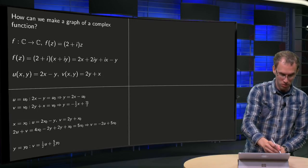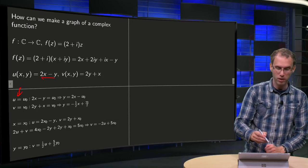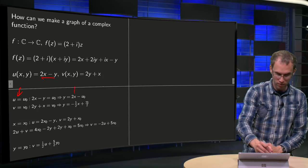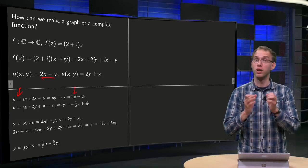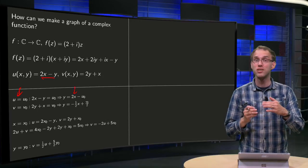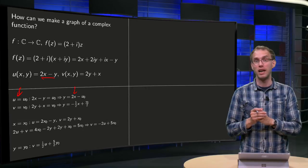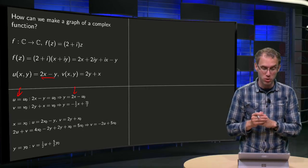So setting u equals u₀ constant we get 2x minus y equals constant, and we can solve for y, so we get y equals 2x minus u₀, where u₀ is a constant. So in the xy plane we will have lines with slope 2, which intersect the y axis at minus u₀.